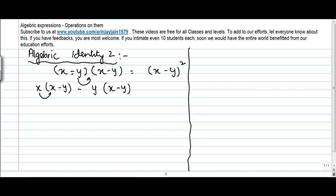Now I start multiplying. x into x gives me x squared minus x into y, xy, minus y into x, minus xy, and minus y into minus y will give me plus y squared. Please note minus into minus is plus.